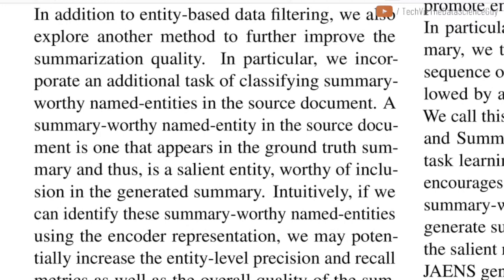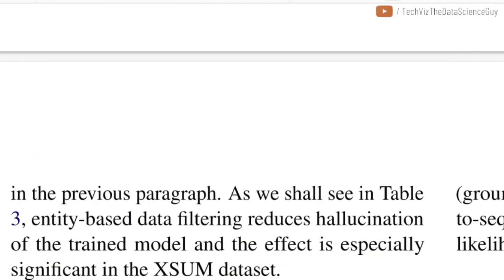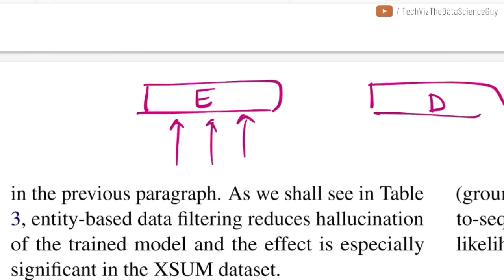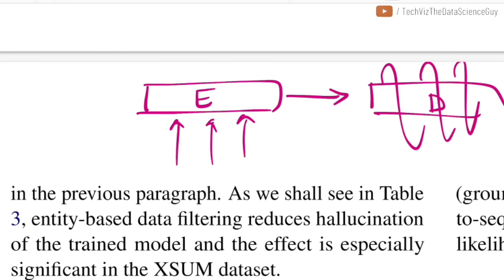One of the methods introduced to improve entity hallucination is a multitask loss based on identifying summary-worthy named entities in the source document. Summary-worthy named entities are entities present in the source document that also appear in the ground truth summary. They use BART for training. In the typical sequence-to-sequence architecture, the encoder processes lexical input and produces a thought representation, and then the decoder does language modeling with teacher forcing.